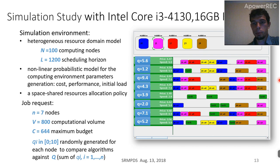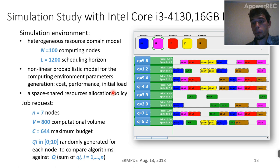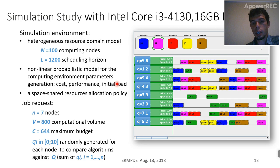Next, we performed a simulation experiment in our custom distributed computing environment simulator with the following settings: 100 computing nodes. We performed a window allocation procedure for one single job requiring seven simultaneously available nodes. For generality, we introduced an independent random parameter Q for each node, and during window allocation we tried to maximize the sum of Q across the seven acquired nodes.